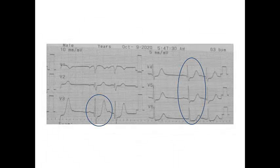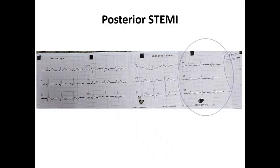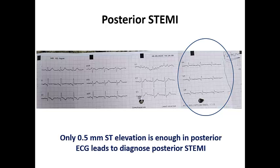In this ECG example, there is a prominent R wave starting from V3 and extending to V6, suggestive of posterior STEMI. If we place ECG leads in V7, V8, and V9 positions, it would show ST elevation confirming posterior STEMI.